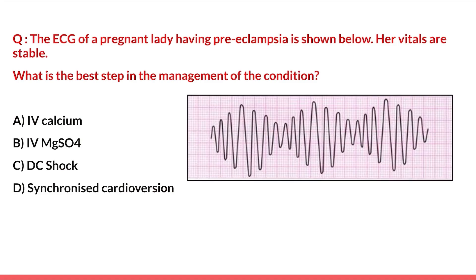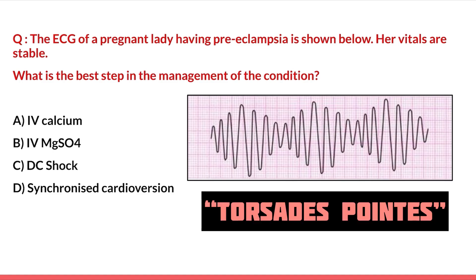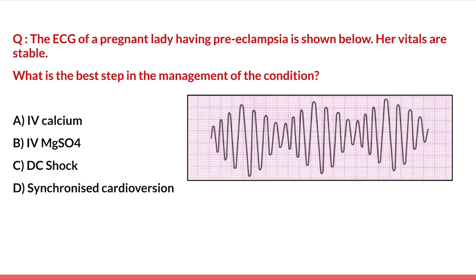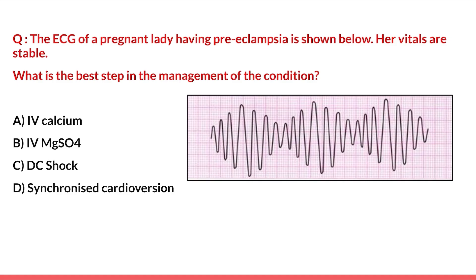The last question: an ECG of a pregnant lady with preeclampsia is shown. Her vitals are stable. What is the best step in management? The ECG is characteristic of torsades de pointes. The drug of choice for torsades de pointes is IV magnesium sulfate. So the best step is option B: IV magnesium sulfate. DC shock and synchronized cardioversion are not required because the vitals are stable, and IV calcium is not indicated in this condition.